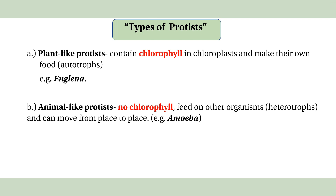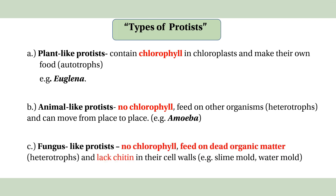Fungus-like protists use locomotion and can move from place to place. They have no chlorophyll and obtain nutrients from organic matter through saprophytic or heterotrophic feeding.